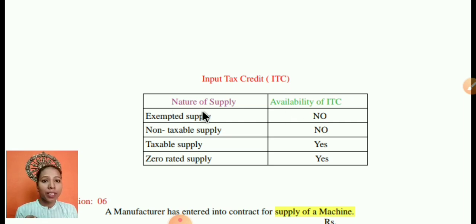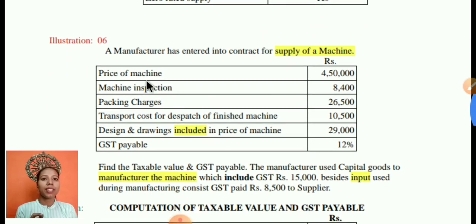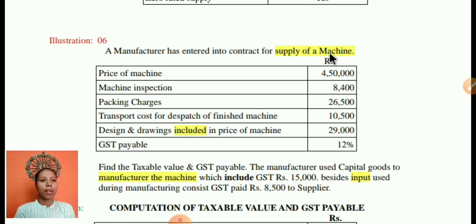But ITC is not available on exempted supply. Let's look at some examples. A manufacturer has entered into a contract for supply of a machine. The price of the machine is given. Machine inspection and packing charges are additional charges by the supplier. There is also transportation cost for dispatch and design and drawings, which are included in the price of the machine — that is four lakh fifty thousand. The applicable GST rate is twelve percent.